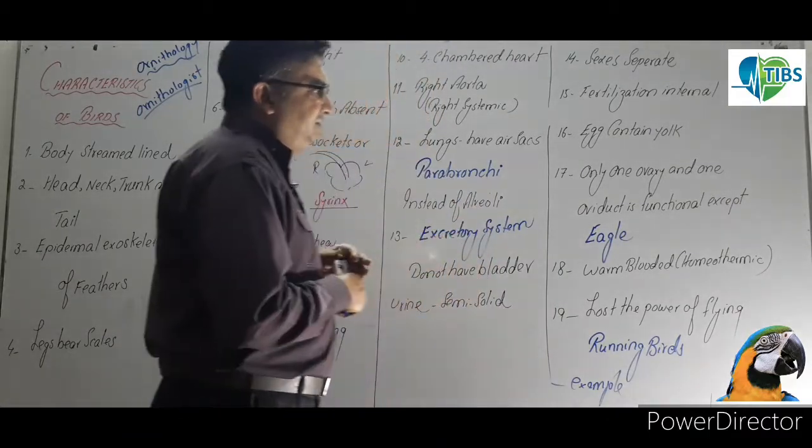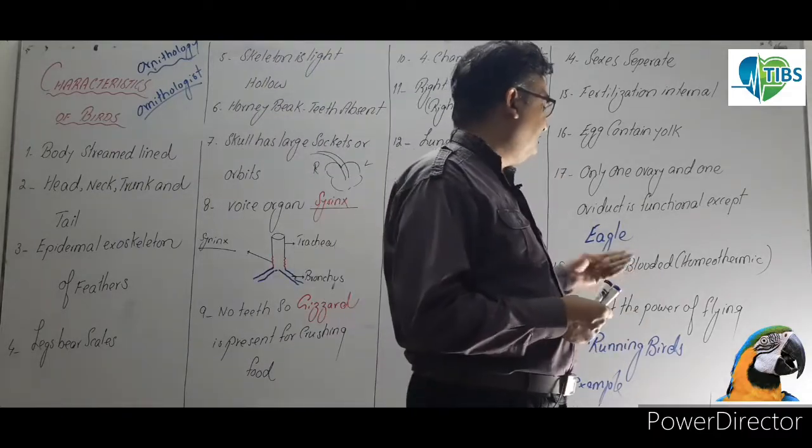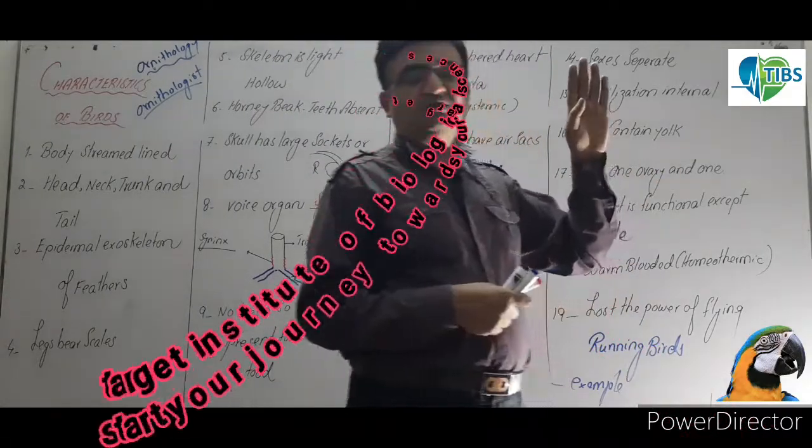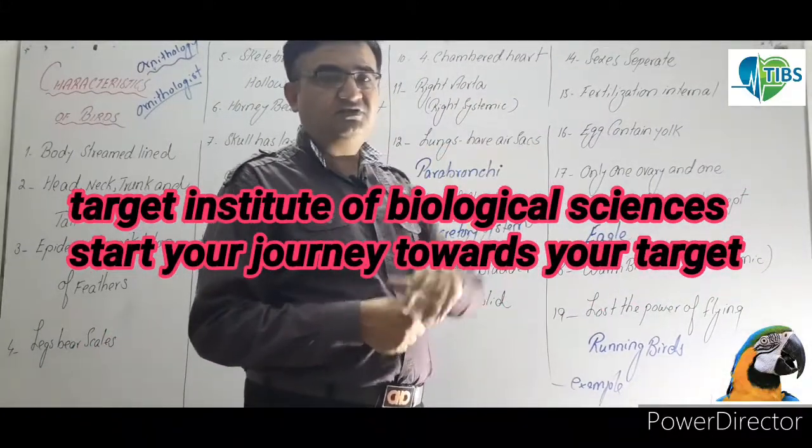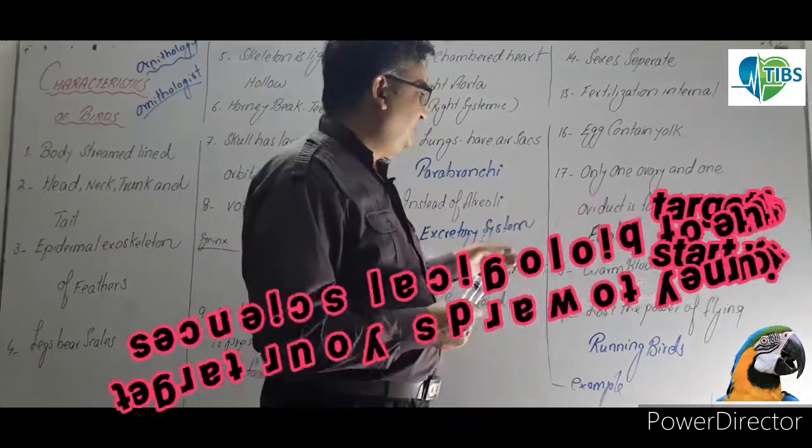They are warm-blooded, meaning they can maintain their temperature. Whatever the outside temperature, due to their homeostatic function, they maintain their temperature. That's why they are also called homeothermic, warm-blooded.